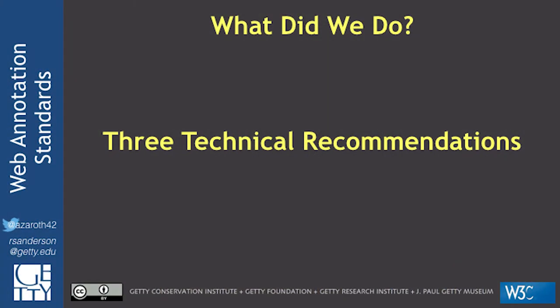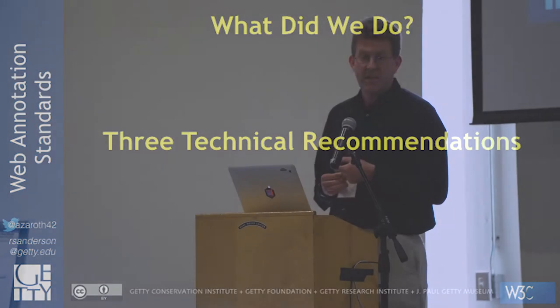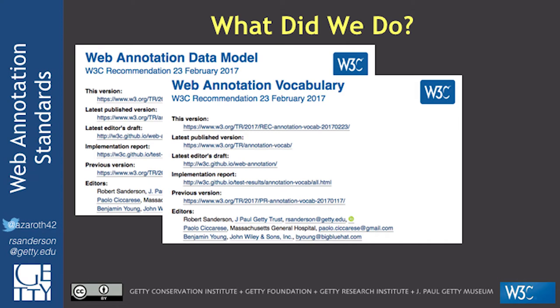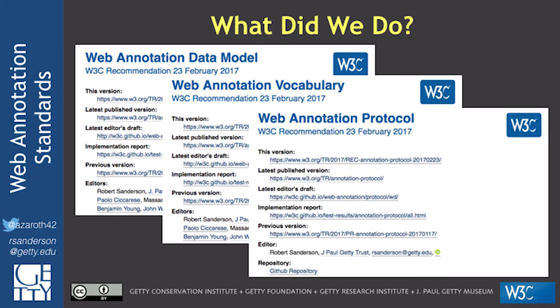For those who were not part of the work for the last nine years, what did we do? We published in February three technical recommendations — specifications with the same status as HTML, CSS, and JavaScript. This is the highest level the W3C has. The data model covers how to express an annotation and format it using JSON. The vocabulary defines the semantics — the meaning behind all the features of the model. And the Web Annotation Protocol covers how to transfer annotations between systems, whether client and server or server and server.